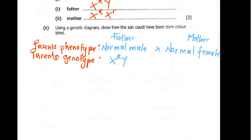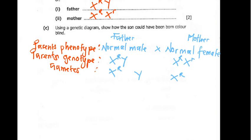For the mother, the genotype is X uppercase R and X lowercase r because she is a carrier. Then we go to the gametes — we separate these out, and sometimes you circle them.